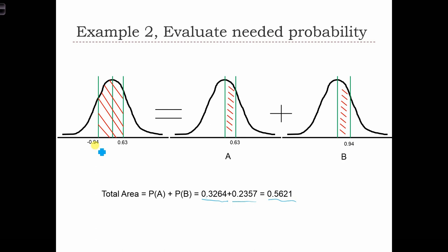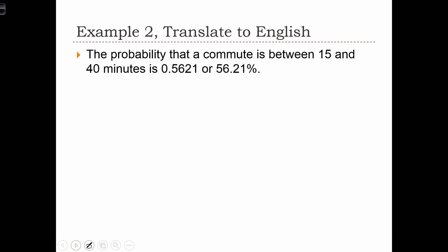In words, remember this was 15 minutes and this was 40 minutes, and the area is 0.5621. So the solution is that the probability that a commute is between 15 and 40 minutes is 56.21 percent.